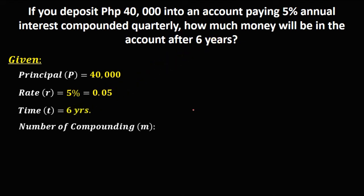And for this number of compounding, the M, so these are the guides. For annual, M is 1. For semi-annually, M is 2.